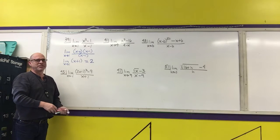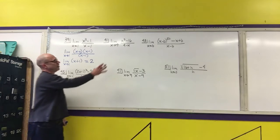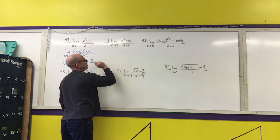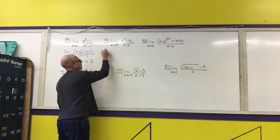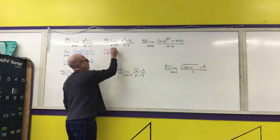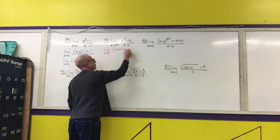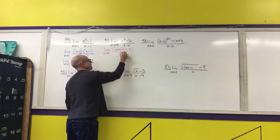So again, factor, simplify if possible, and then evaluate your limit. I'm going to do the same thing for the second problem. This one's slightly different. I'm going to take the limit as x approaches 4 of x plus 4 times x minus 4 over 4 minus x.